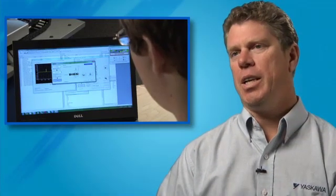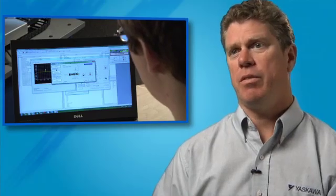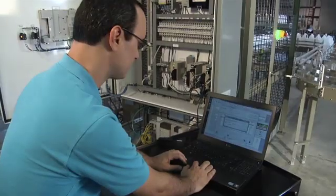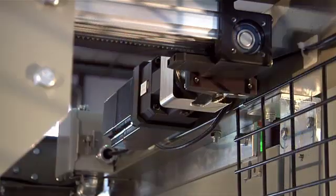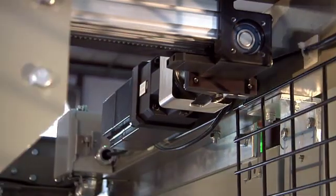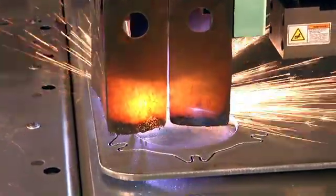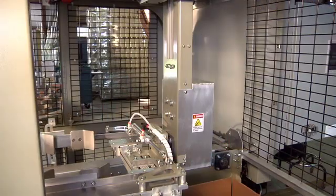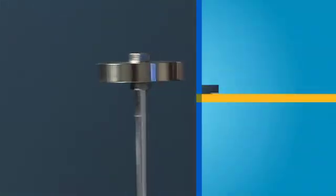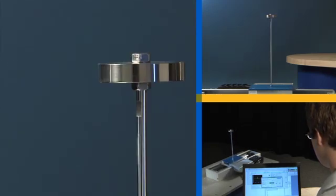So what's unique about Yaskawa's vibration suppression solution is its ease of implementation. With a simple click of a button or auto-tuning wizard, we can automatically detect those vibrational modes with our high-resolution feedback. Just small perturbations and vibrations in the end effector can be seen even through a belt or a ball screw assembly. Once this vibrational mode is found, it's automatically entered into the proper parameter and the vibration is cancelled.